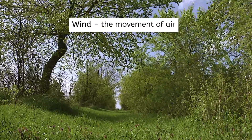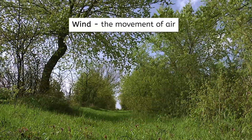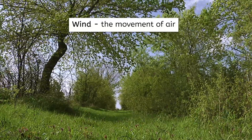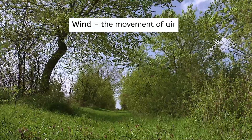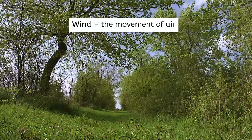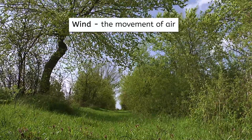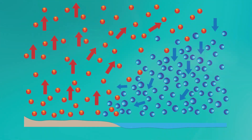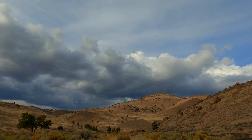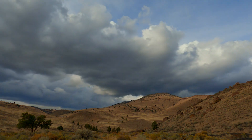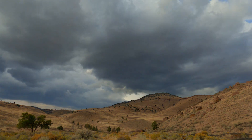Wind is the movement of air. Wind can be small, localized air movement or large-scale global air movement. While it is true that convection currents in the atmosphere cause warm air to rise and cool air to sink, there are lots of other factors that play a role in wind. Pressure gradients, altitude, and the influence of other weather systems all play a role in determining wind.